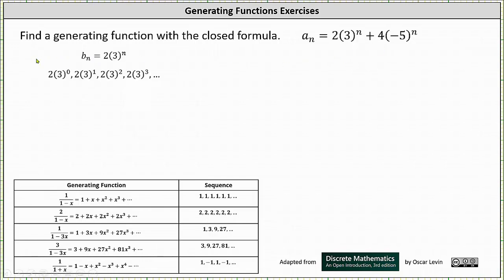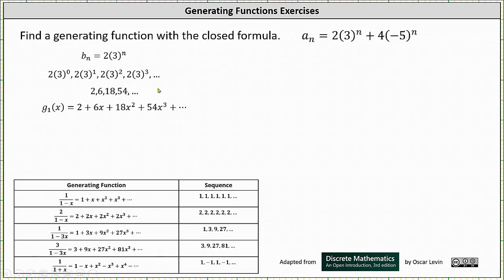We will let b_n equal two times 3^n and generate several of the terms in the sequence. We have n equals zero, one, two, three, and so on. Simplifying, the sequence is 2, 6, 18, 54, ...